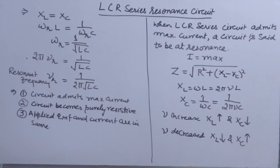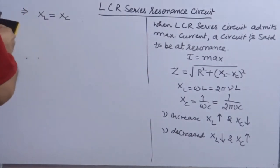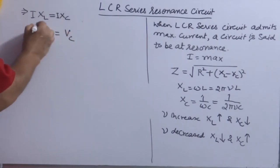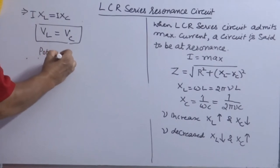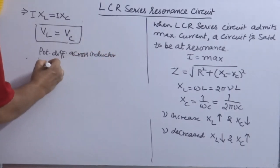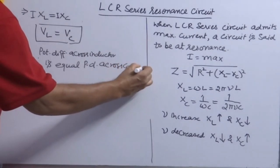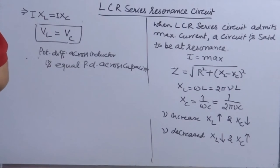And one more condition you can deduce easily. Since XL is equal to XC, this is the condition for series resonant circuit. And in series, current flowing through the circuit is same. So if we multiply I on both sides of this, say I here, I here, this becomes VL, this becomes VC. So at resonance, potential difference across inductor is equal to potential difference across capacitor. This is another important condition. So I told you four different conditions to identify or differentiate between normal LCR series circuit and LCR series resonance circuit.